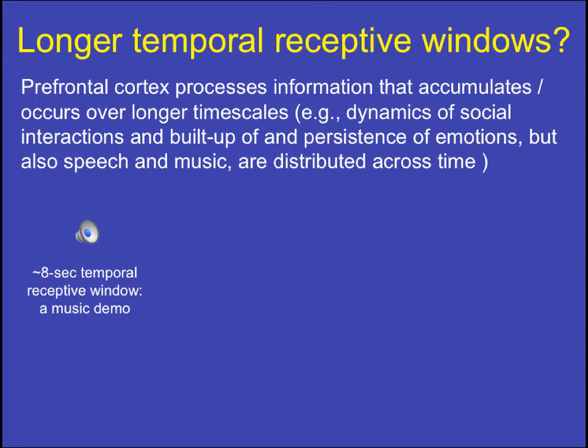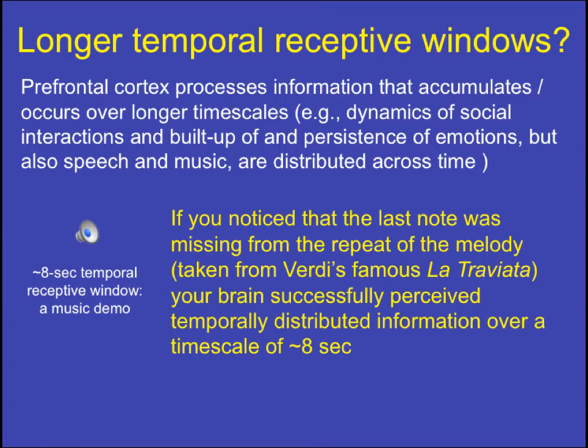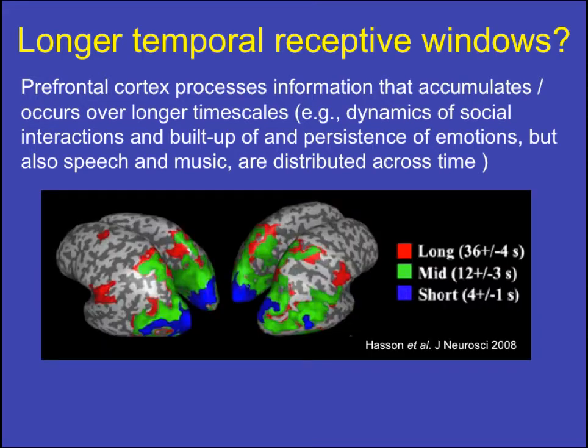Another example from music — a piece from the famous La Traviata — where the last note was missing from the repeated melody. Your brain is successfully perceiving temporally distributed information over a timescale of about eight seconds. There are also reports using scrambled movies over different timescales showing a hierarchy of temporal receptive fields in visual cortical areas.